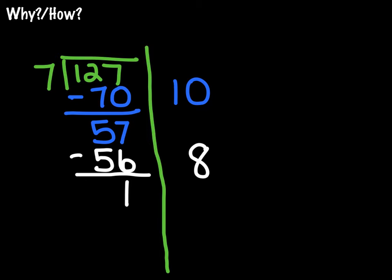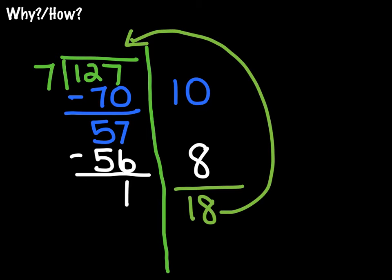I get 1 left over. Now, I know that I can't take any 7s away from 1. So my next step is to actually add the numbers that I used on the right side of the line, which equals 18. I'm going to take that 18 up here, and that becomes my answer with a remainder of 1. So that would be my answer to 127 divided by 7.